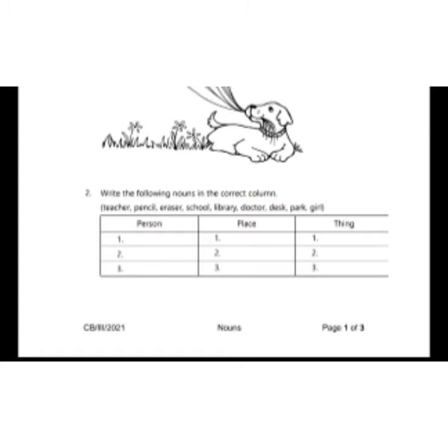Now exercise 2. Write the following nouns in the correct column. There are three columns given as person, place and thing.